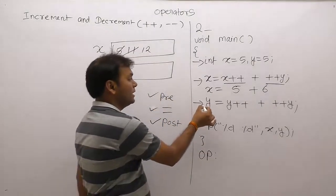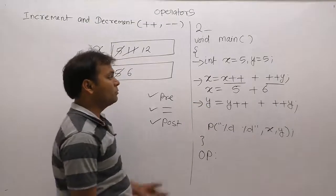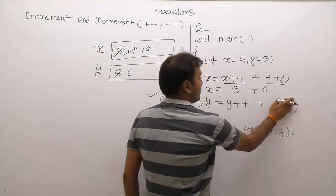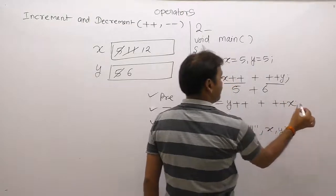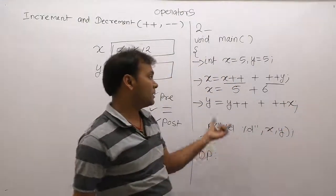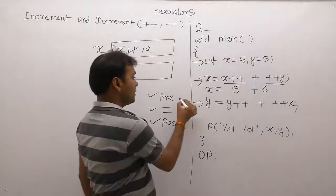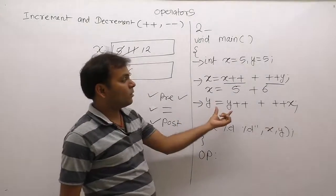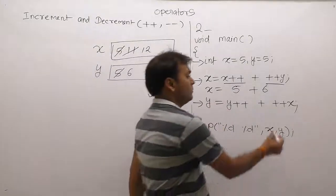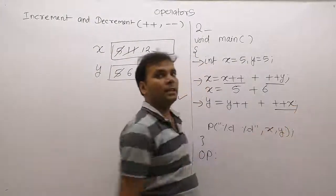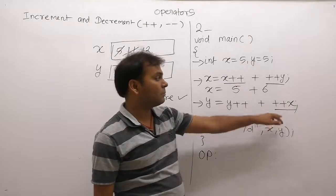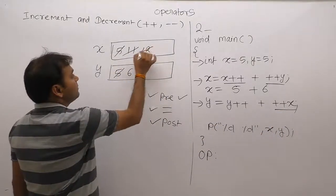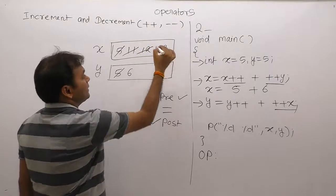Now solving the second expression using the same rules. In this case, x++ is changed to ++x. Again we first perform all pre operations. How many pre operations are there? Only one — a pre-increment applied to variable x. According to pre-increment, the value of x is incremented, and x becomes 13.